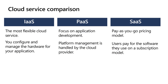IaaS, or infrastructure as a service, is the most flexible cloud service model. It allows you to configure and manage the hardware specific for your application, but it also carries the administrative burden of having to update and patch any virtual machines that you use. PaaS, or platform as a service, allows you to focus on application development and consumes the services that the cloud service provider has deployed, while the provider manages the underlying platform, updates, and security patches. SaaS, or software as a service, provides pay-as-you-go pricing for access to applications. You'll only pay for the software that you use — if users join your organization, you pay more; if they leave, you pay less.